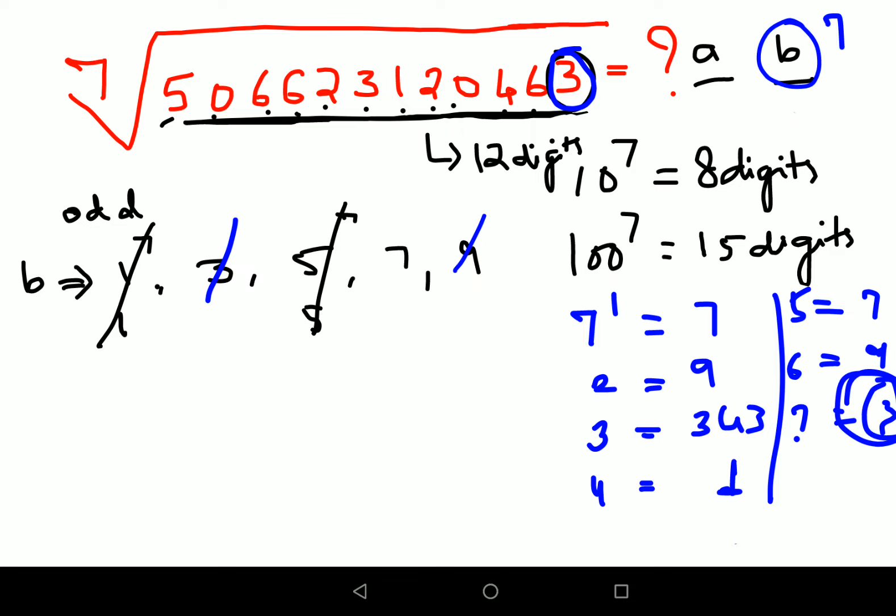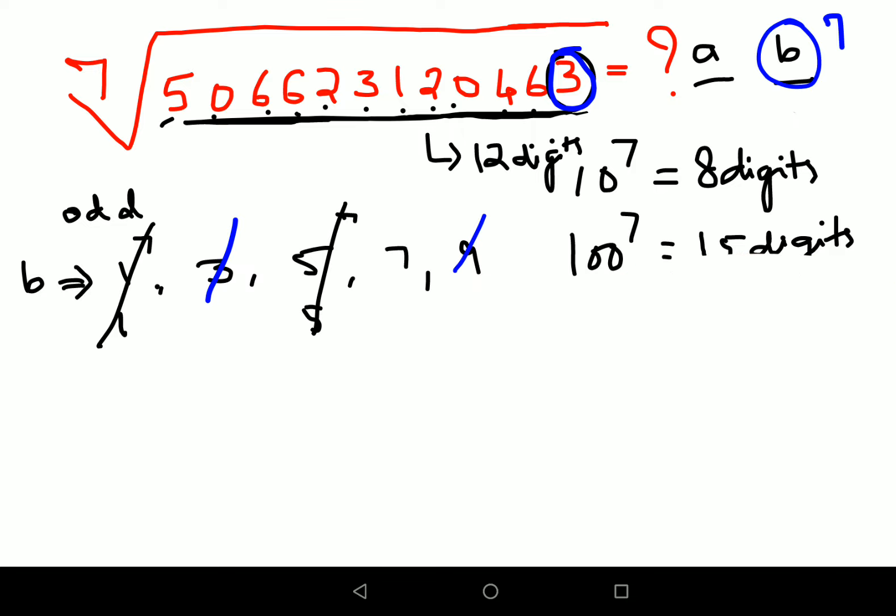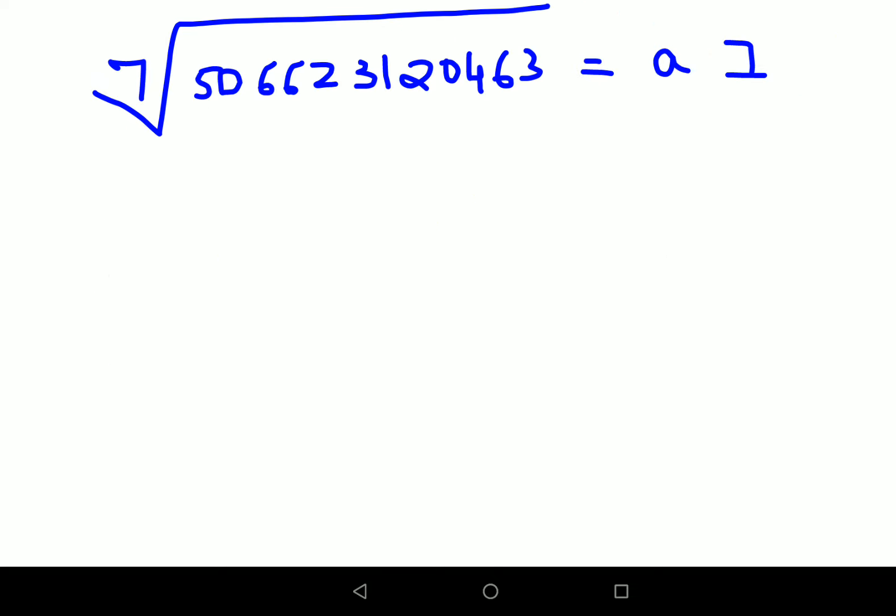So, by default, now, I can say that my B value is 7. 7 is my answer for B. Now, let's look at what will be the answer for A.